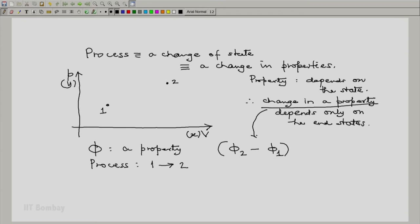This is the change in our property. This is represented quite often by delta phi, or sometimes to be specific that it pertains to the process 1 to 2, delta phi 1 to 2. And this change in property one should appreciate depends only on the end states.